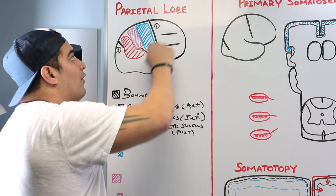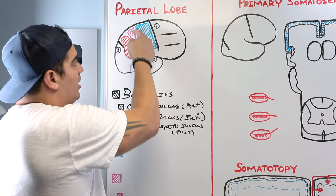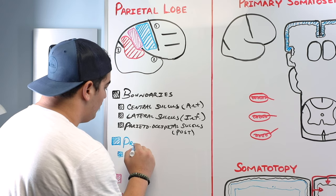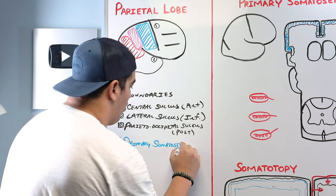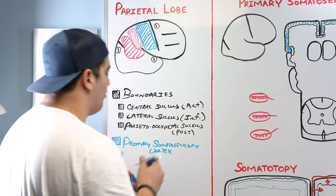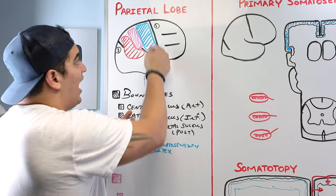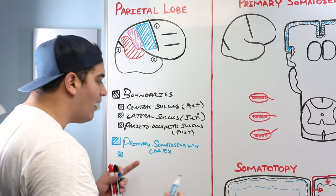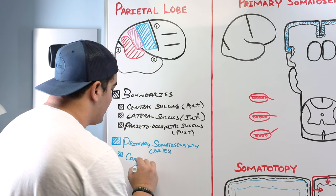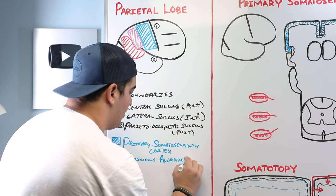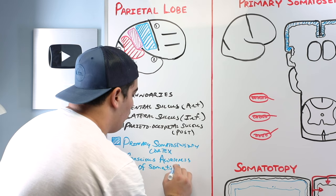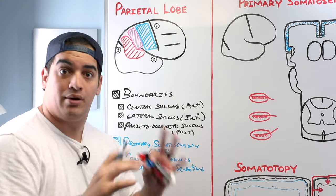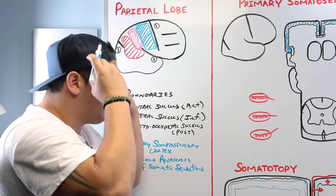The next thing we have to cover is some particular functional areas of the parietal lobe. This blue area just posterior to the central sulcus is called the primary somatosensory cortex, which resides in the post-central gyrus. The primary somatosensory cortex is involved in our conscious awareness of somatic sensations — things like touch, pain, temperature, vibrations, pressure, and proprioception. All of those things are consciously perceived in this area of the brain.